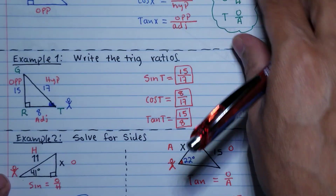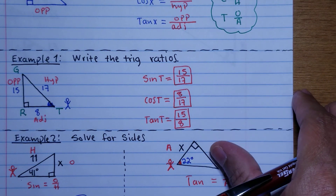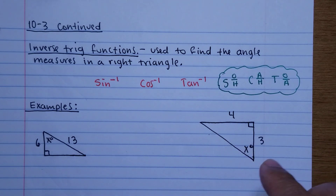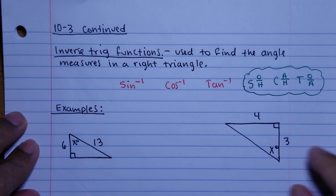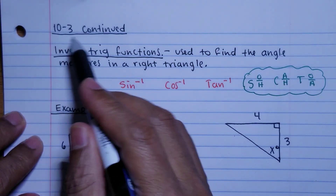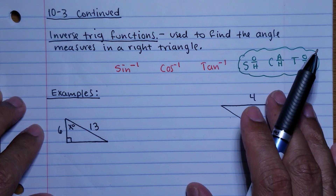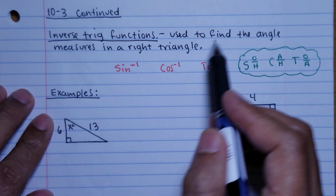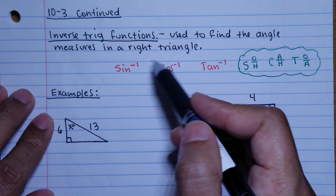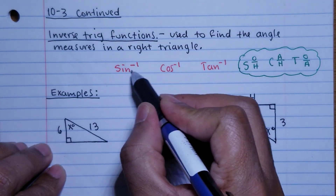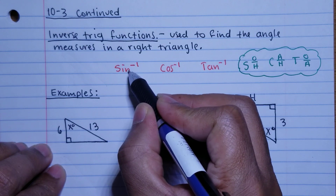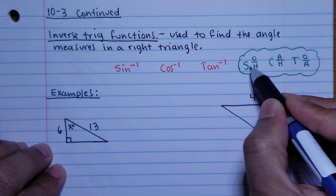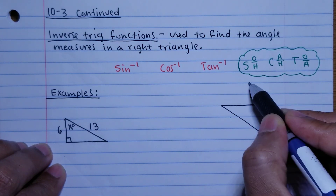Pause the video and copy this last part — this is the final section of the lesson. This is lesson 10-3 continued. Now we're going into inverse trig functions, which help you find the measures of angles in a right triangle. We have the inverse of sine, the inverse of cosine, and the inverse of tangent. Remember SOHCAHTOA to choose which function to use.